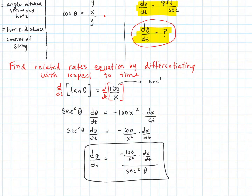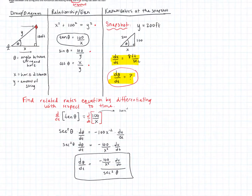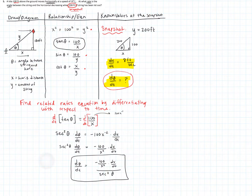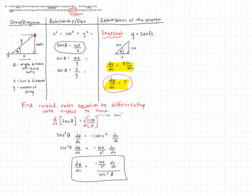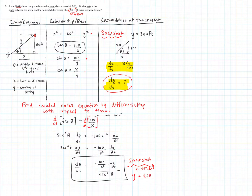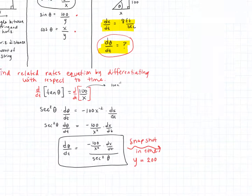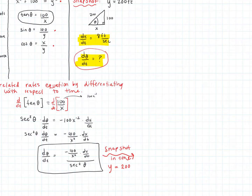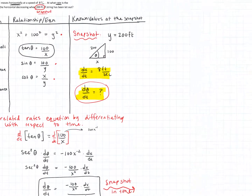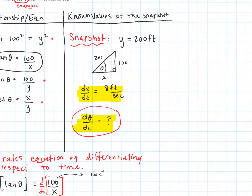Now we need to apply the snapshot in time. We were told Y equals 200, but Y is not in this equation. We need X and theta in order to plug in. Looking at that snapshot triangle with the hypotenuse (amount of string) equal to 200, we have enough information to solve for both X and theta.